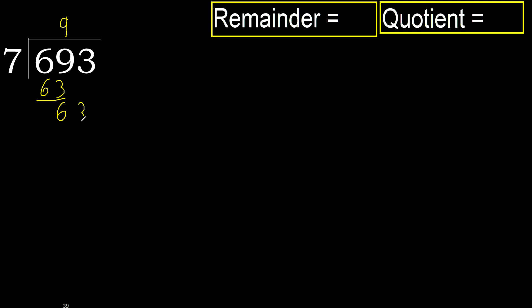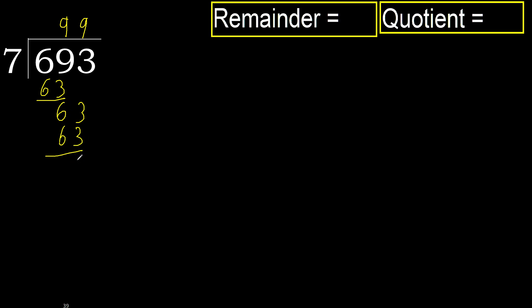Next, bring down to get 63. Multiply by 9 gives 63. Subtract: 63 minus 63 equals 0.